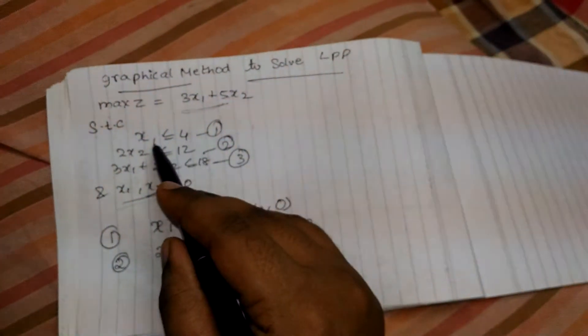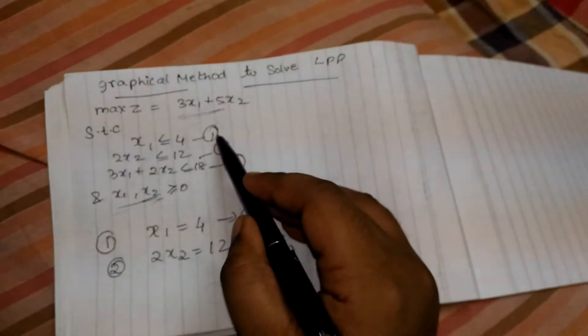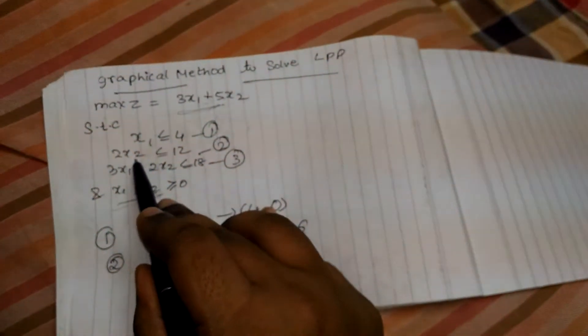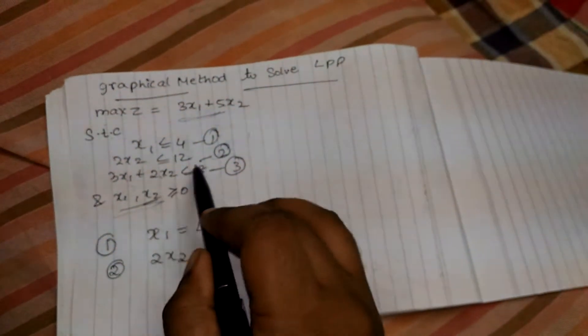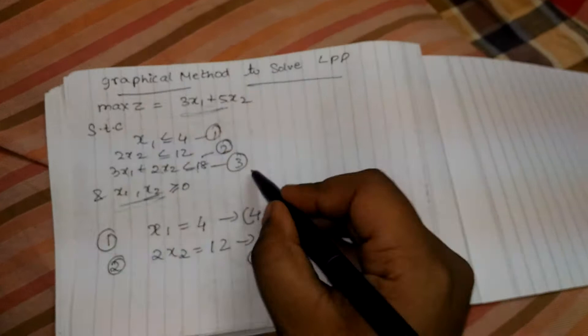Subjected to constraint, x1 is less than equal to 4. Let us take this as first equation. 2x2 is less than equal to 12 and this is the second equation. 3x1 plus 2x2 is less than equal to 18. This is the third equation.